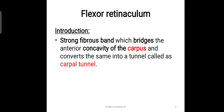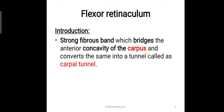The flexor retinaculum is a strong fibrous band which bridges the anterior concavity of the carpus, and it converts the same into a tunnel called as the carpal tunnel. The term carpus refers to the carpal bones. So we will see how the concavity is formed in the arrangement of the carpal bones.